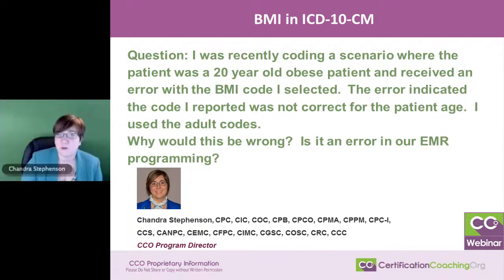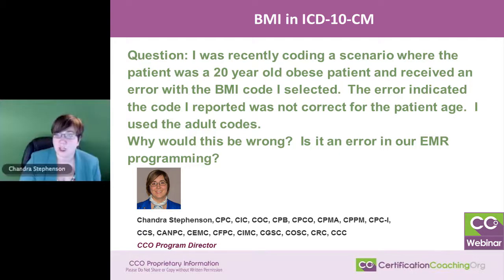I was recently coding a scenario where the patient was a 20-year-old obese patient and received an error with the BMI code that I selected. The error indicated the code I reported was not correct for the patient's age. I used the adult codes. Why would this be wrong? Is it an error in our electronic medical record programming?